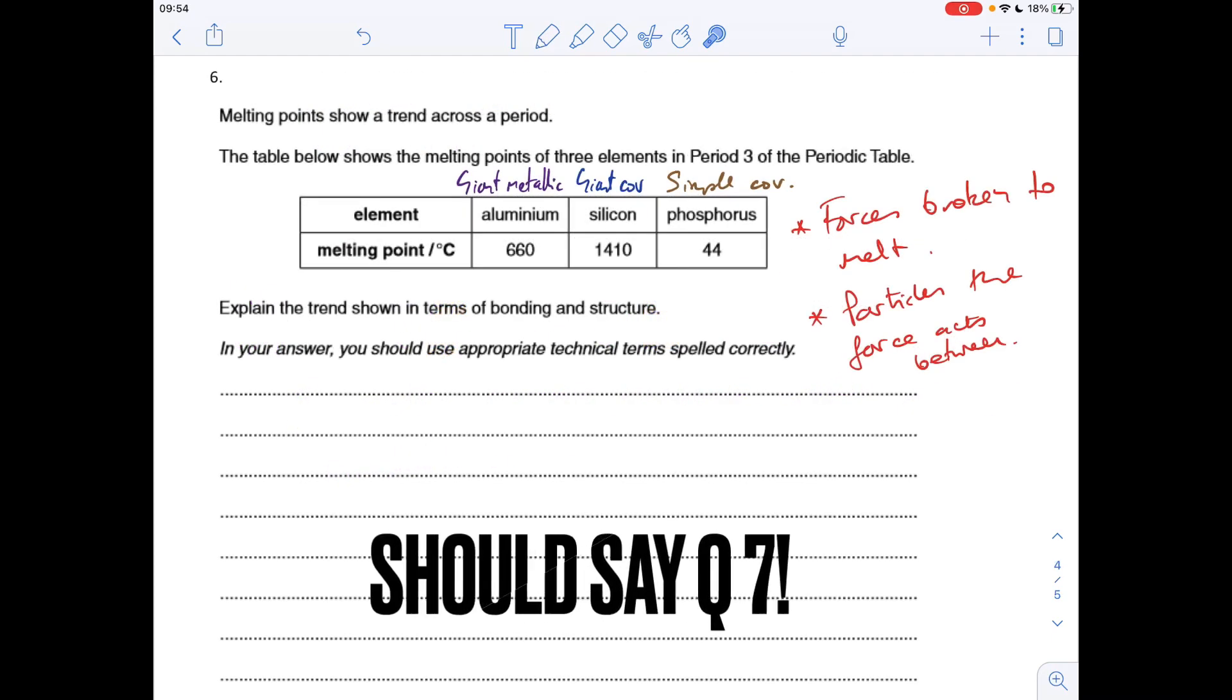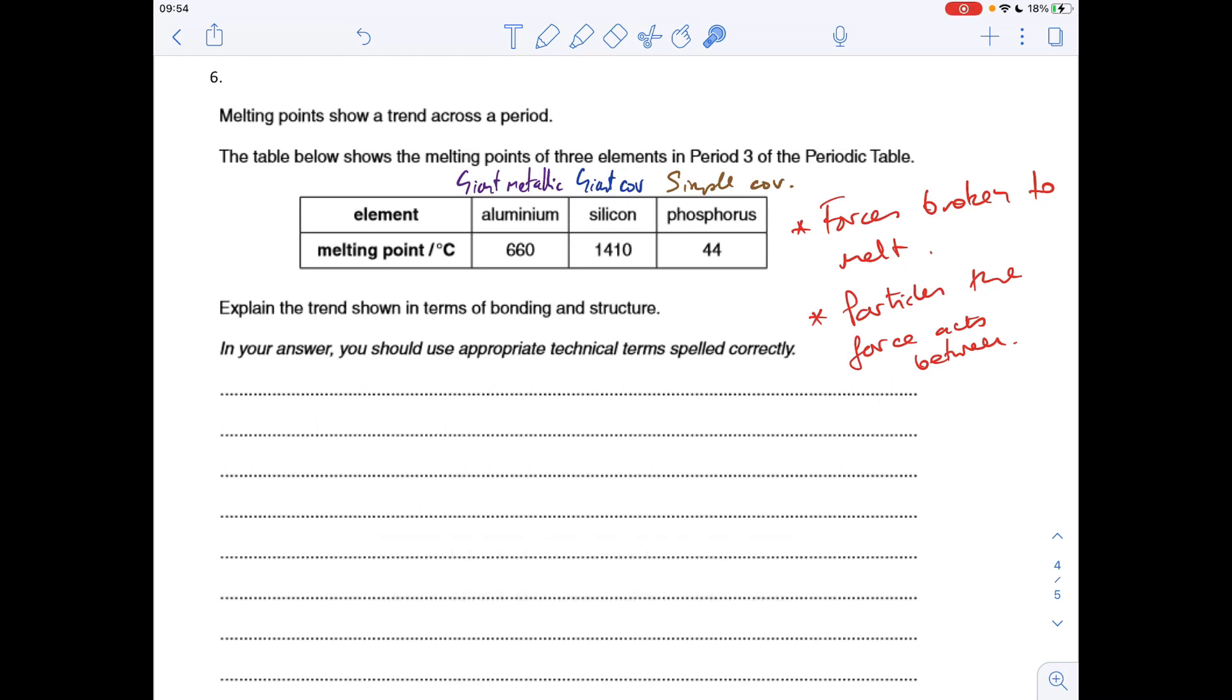Okay, so the final question. I've already written a few bits up that I'm going to mention in a moment. The key to a question like this is to make sure that you use the correct terminology. It's so easy to put the wrong term in the wrong place and you just start losing marks. I've noticed that with my students and I'm sure they're not any different to the rest of the country. So basically it's all down to bonding and structure. You can see I've already written up there, aluminium's got a giant metallic structure, silicon's giant covalent, phosphorus's simple covalent. So what we've got to get into our answer is what forces need to be broken to melt the substance and what kind of particles does that force exist between.